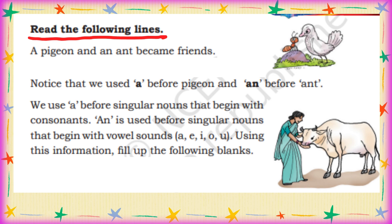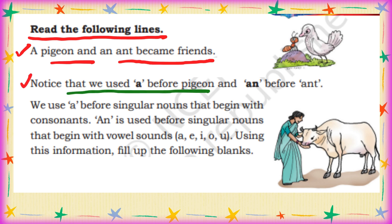Read the following lines. Here we have to read and see what we get to learn. A pigeon and an ant became friends. We notice that we use A before 'pigeon' and AN before 'ant'.